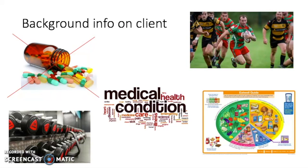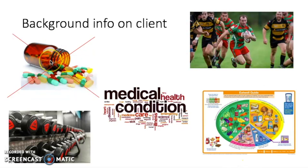I carried out a lifestyle questionnaire on my client to find out a bit about him and what he gets up to, and found some background information about him. I then performed five different health screening tests on my client which I am going to be talking about. A bit of background: he plays rugby, he regularly goes to the gym, he eats an alright diet, doesn't take any medication and has no medical conditions. I'm going to be comparing his results to the average for his age and height and to normative data value tables.